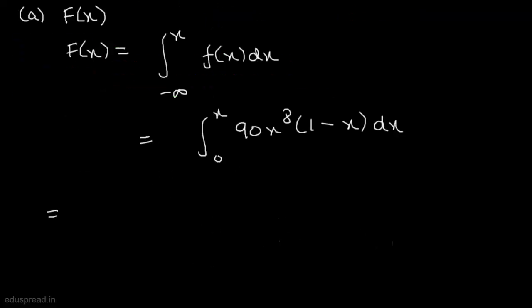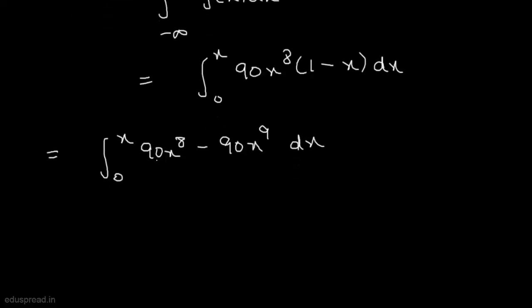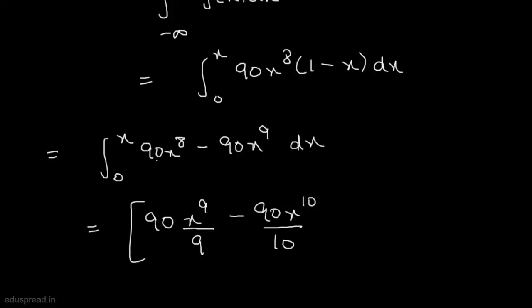This is equal to the integration of 90x raised to the power 8 minus 90x raised to the power 9, dx from 0 to x. Integrating, this equals 90x raised to the power 9 divided by 9 minus 90x raised to the power 10 divided by 10, evaluated from 0 to x.